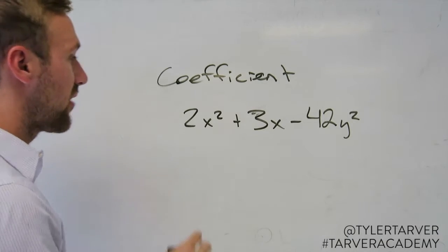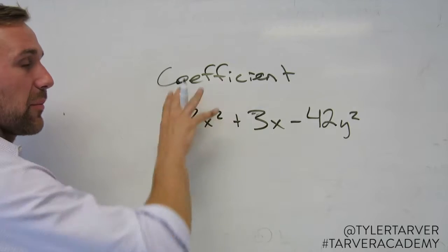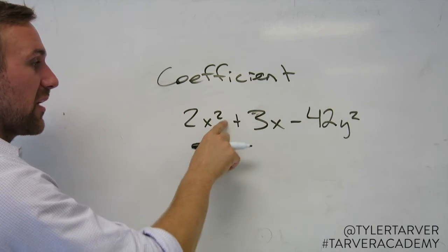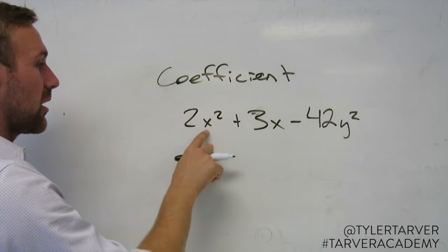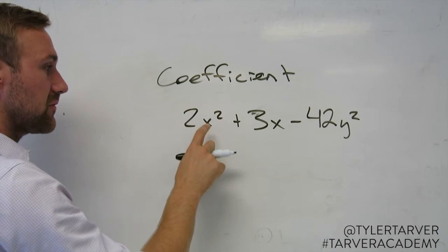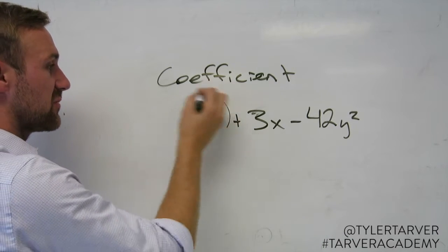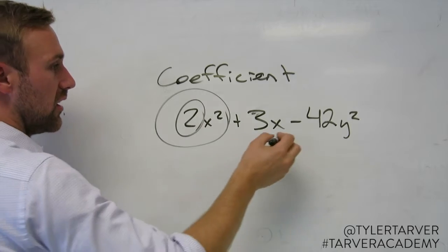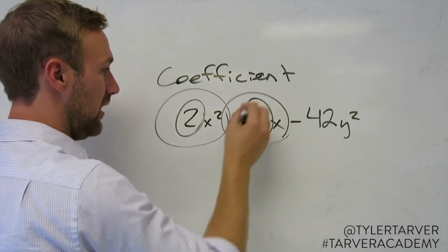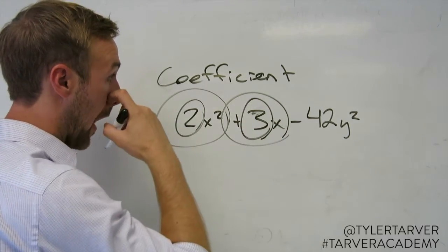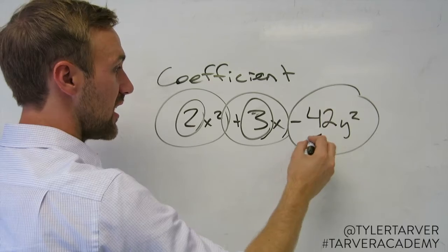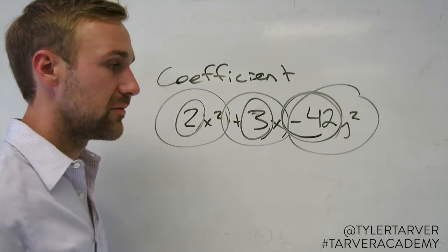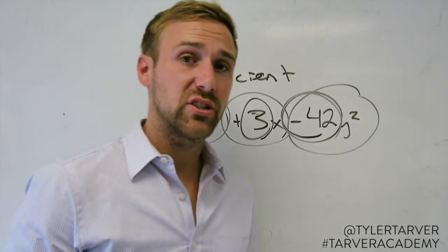It's the number in front of the variable. Remember in the last problem when we were talking about combining like terms? For coefficients, we just care about the number. The coefficient in this term is 2. The coefficient in this one is positive 3. The coefficient in this one is negative 42. Don't forget your signs. That's simply put what a coefficient is.